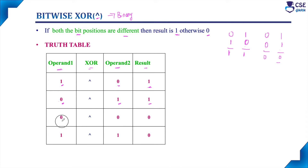If operand one bit position is zero and operand two bit position is also zero, both bit positions are the same, so the result will be zero. The simple logic is: if both bit positions are different, the result will be one; if both bit positions are the same, the result will be zero. This is the logic of the bitwise exclusive OR operator.